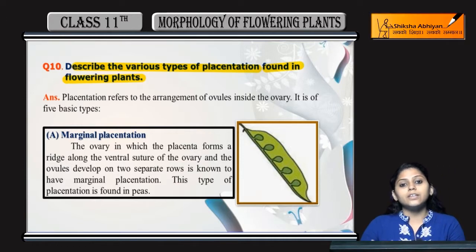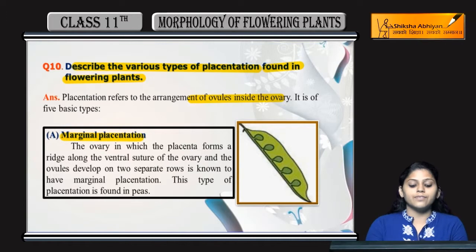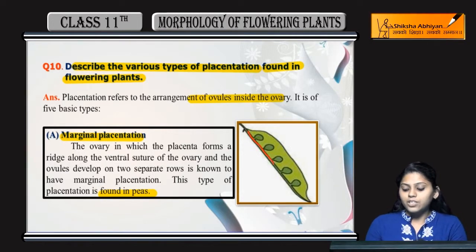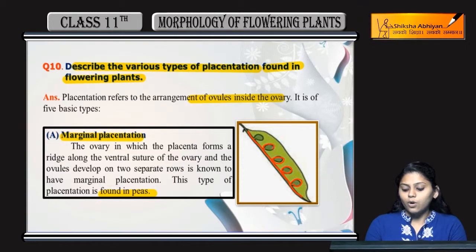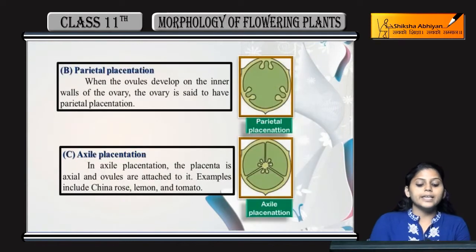Placentation is an arrangement of ovules inside the ovary. There are 5 basic types. The first is marginal placentation. It is found in peas — as the name indicates, ovules are present on the margin, on the ventral suture. This is called marginal placentation.